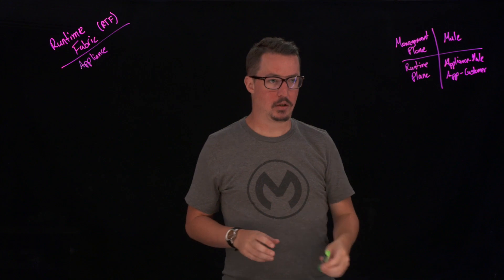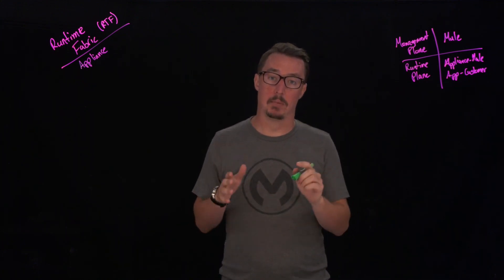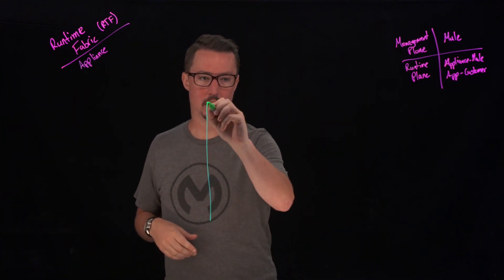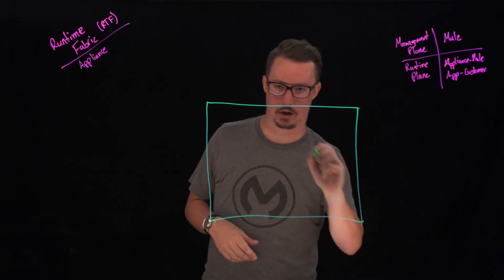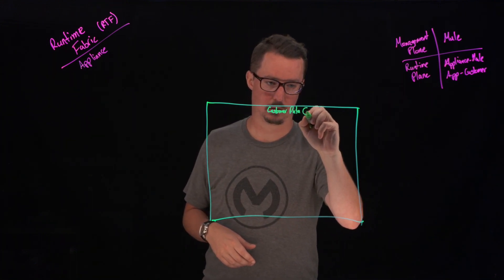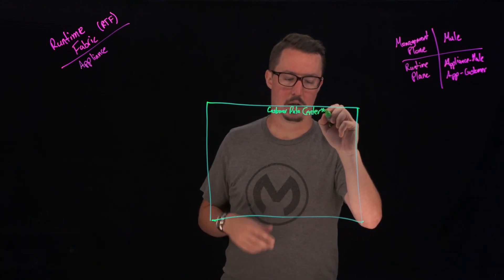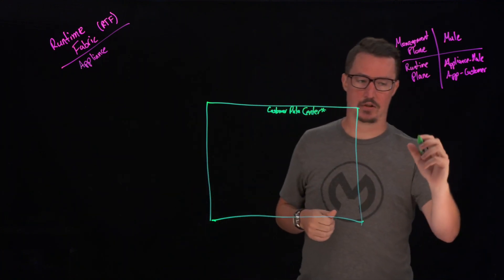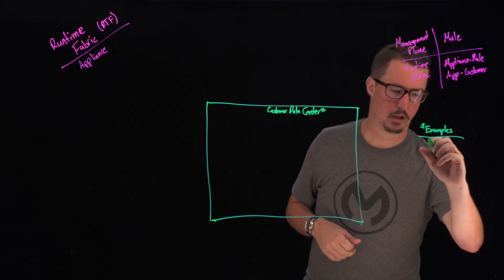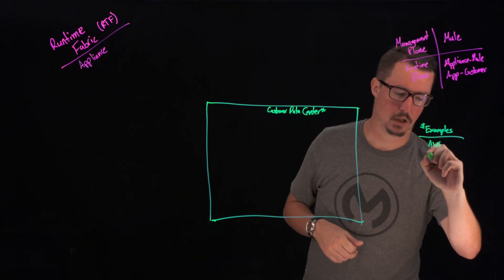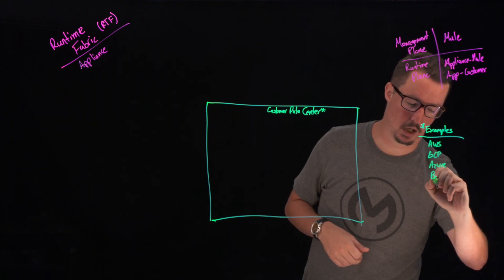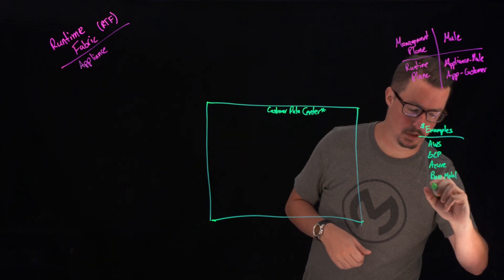Let's take a quick look at what this is actually going to look like when we implement this on a customer's data center. We're going to draw out our customer data center. When I say customer data center, there are multiple different options — this could be Amazon's AWS, Google's GCP, Azure, or maybe even just a bare metal server, among multiple other options.